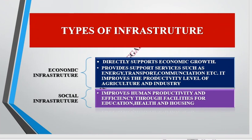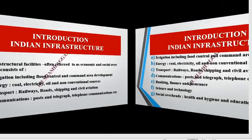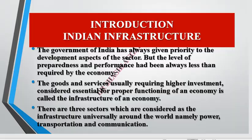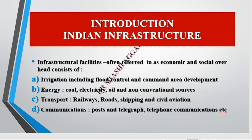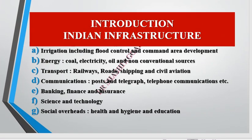Social infrastructure improves human productivity through education, health and housing facilities. Infrastructure facilities, referred to as economic and social overhead, consist of: irrigation including flood control; energy including coal, electricity, oil and non-conventional sources; transport including railways, roads, shipping; communication including telegraph, telephone; banking, finance, insurance; science and technology; and social overheads such as health, hygiene and education.